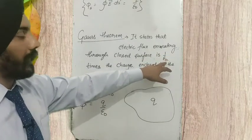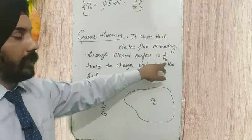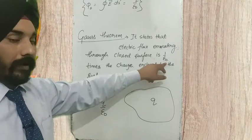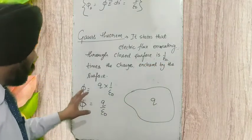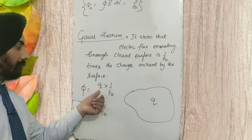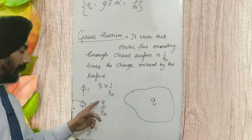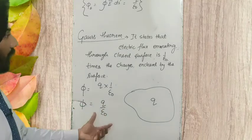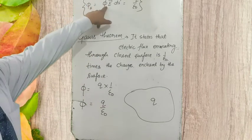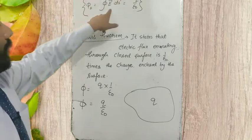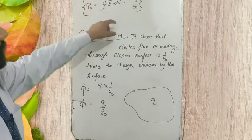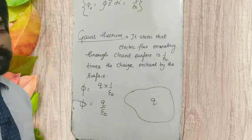How much electric flux is coming out from a closed surface? That must be 1 upon epsilon naught times the charge. What is epsilon naught? Epsilon naught is the permittivity of free space — its value is 8.85 × 10⁻¹². So, the flux that comes out is 1 upon epsilon naught times the charge enclosed by the surface, that is Q by epsilon naught. More correctly, we write this as phi E equals the closed surface integral of E dot dS, which equals Q by epsilon naught.